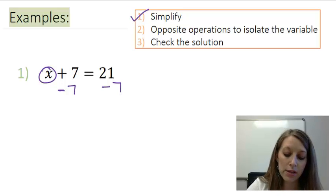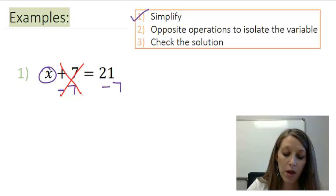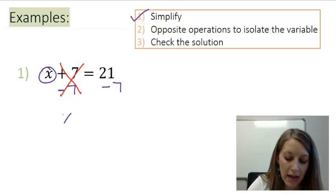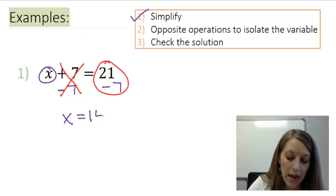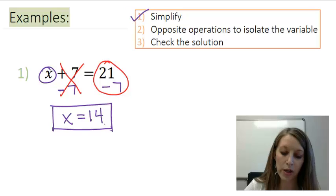So the reason that we do these opposite operations is because they will cancel out. So on the left, my positive 7 and my negative 7 cancel out. That leaves me with x. And on the right, when I take 21 minus 7, that gives me 14. And now since I have my x isolated, that means I have my solution to this equation.